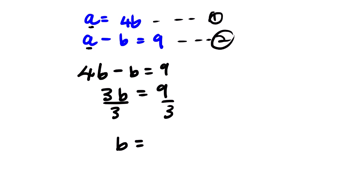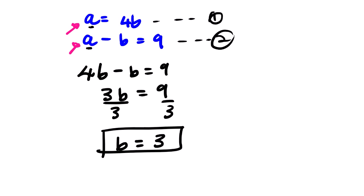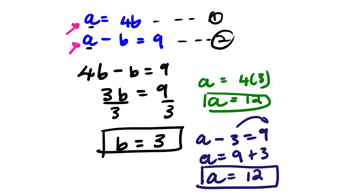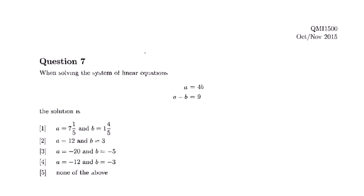Substituting a equals 4b into a minus b equals 9: 4b minus b equals 9, so 3b equals 9. Dividing both sides by 3 gives b equals 3. We then substitute b equals 3 back: a equals 4 times 3, so a equals 12. We can verify: a minus b equals 12 minus 3 equals 9, which checks out. Looking at our options, option 2 is the correct answer.